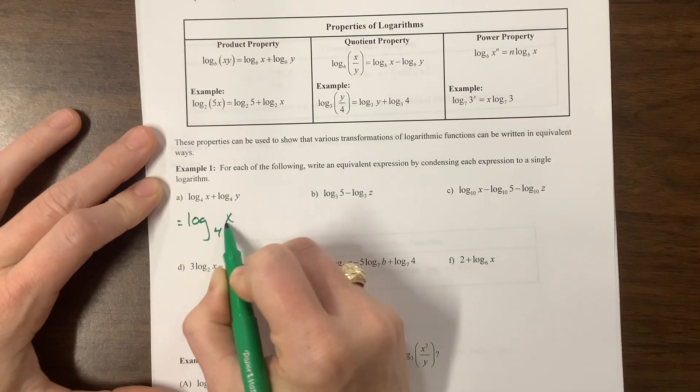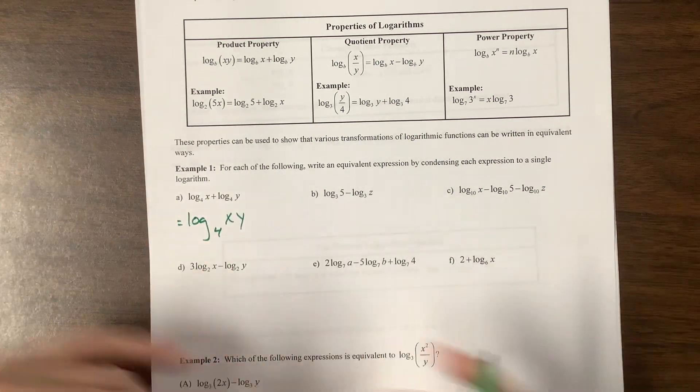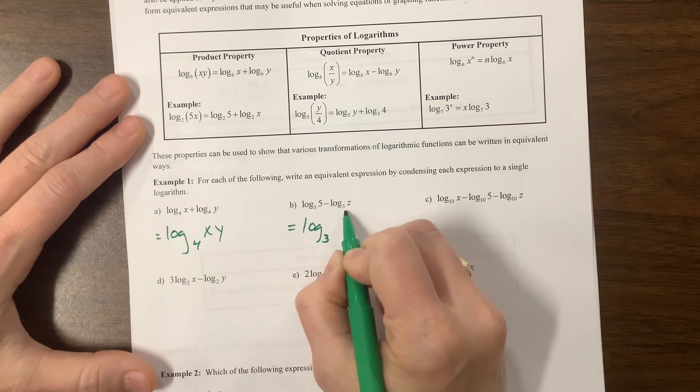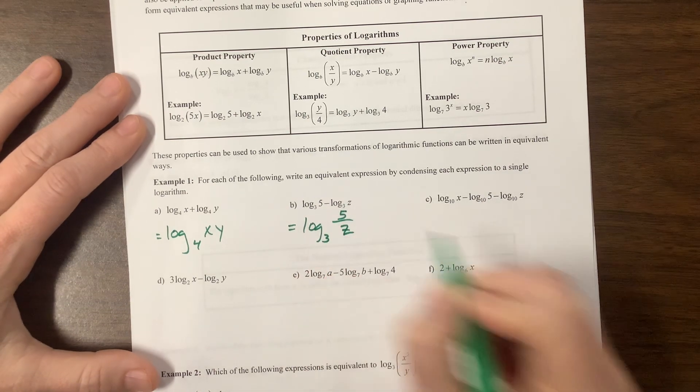This is equal to log base 4 of x times y. We can squish addition together with multiplication. This is log base 3. The subtraction gets squished together with division. That's a 5 over z.